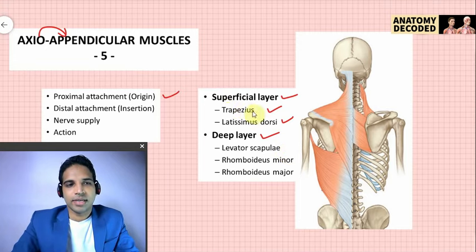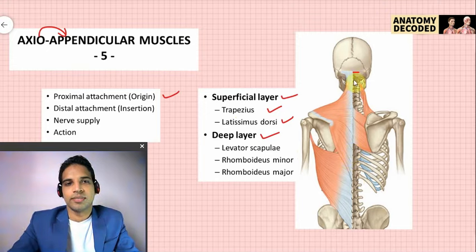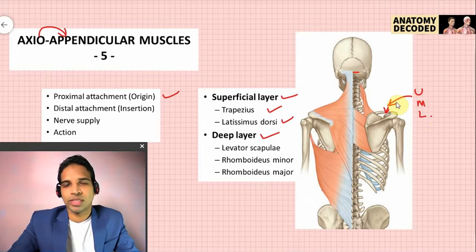The proximal attachment of trapezius is from the superior nuchal line, the ligamentum nuchae, and the spines of all 12 thoracic vertebrae — such extensive origin. The distal attachment is described with respect to three fiber types: upper fibers go to the posterior border of the lateral one-third of the clavicle; middle fibers attach along the medial margin of the acromion and the upper lip of the spine of the scapula.